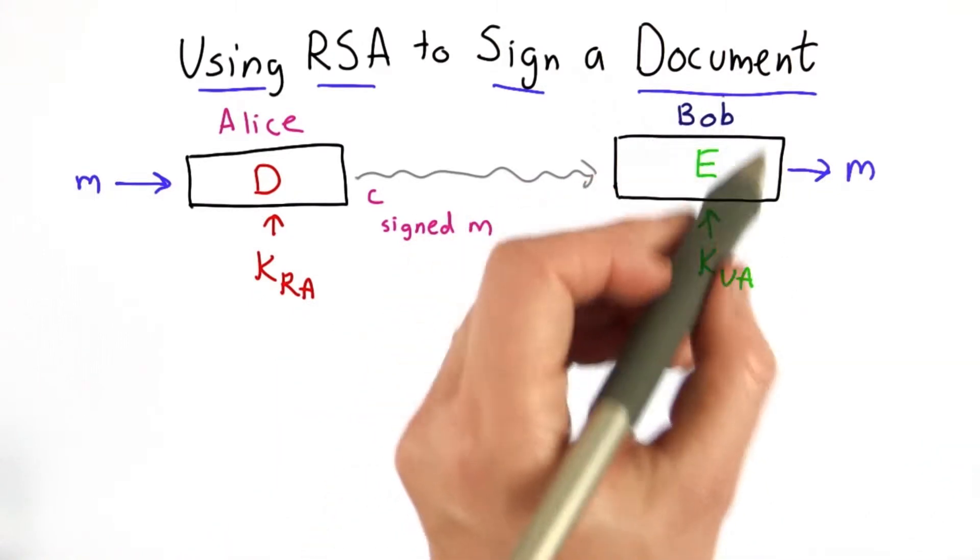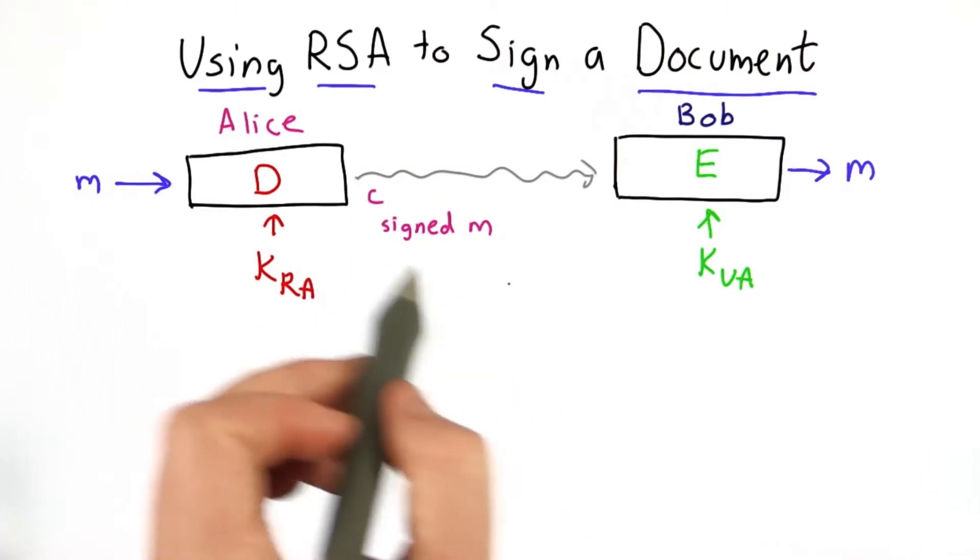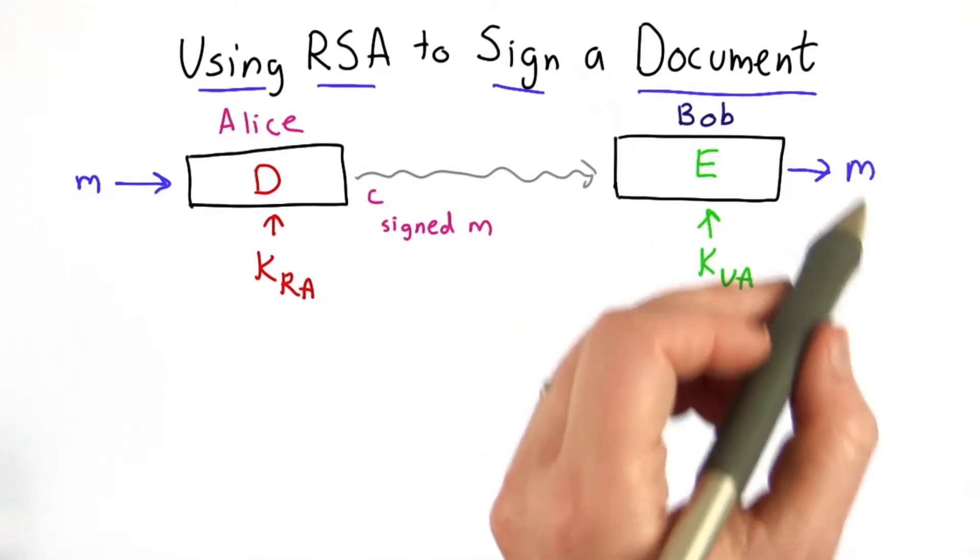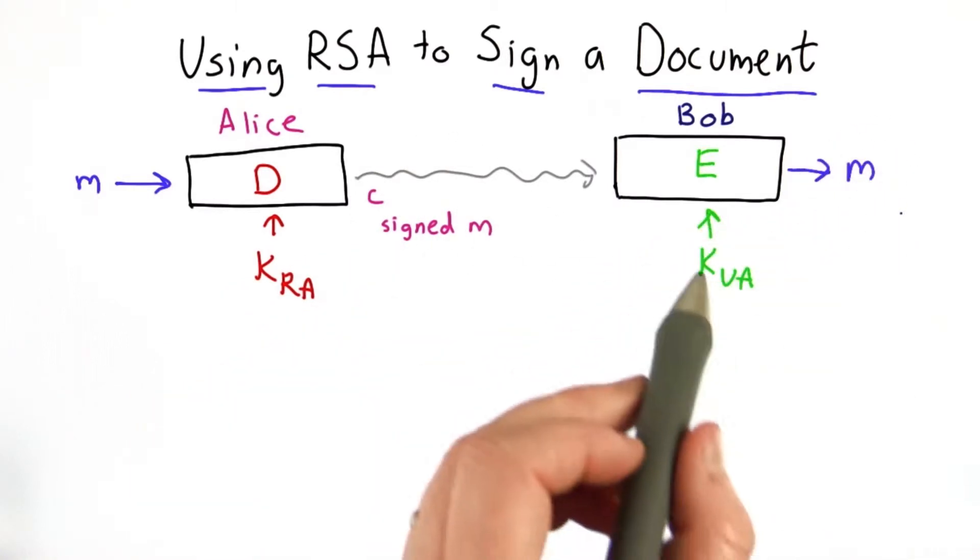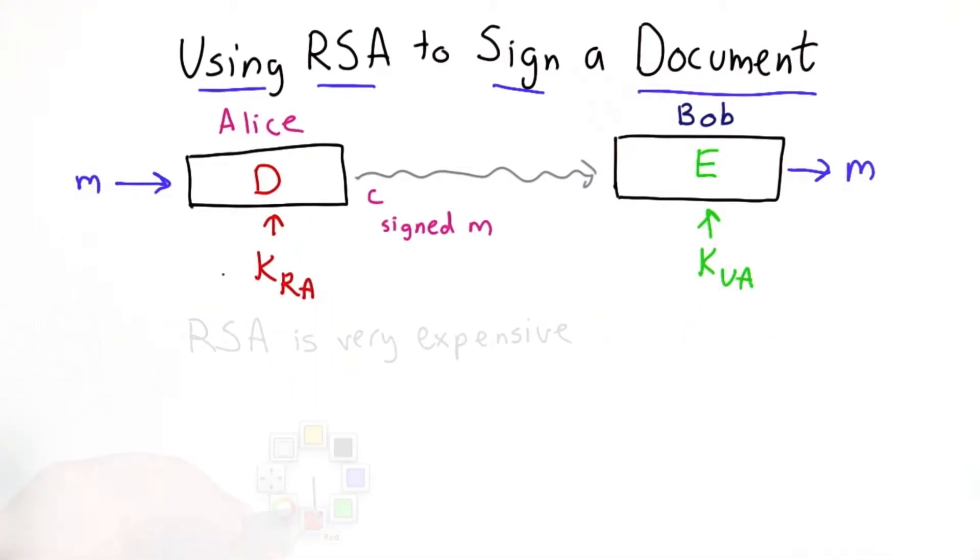Anyone who has her public key, including Bob, can now use encryption using her public key on that signed document and obtain the document and verify, because this document was decrypted using Alice's public key, that only Alice could have created it.